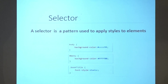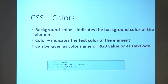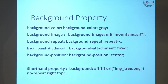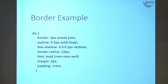Going real quick: element, ID and class selectors, descendant and child. How to add colors — different ways. Then the background property — you can have an image for a background and have it repeat. Then we looked at borders and different types of borders.